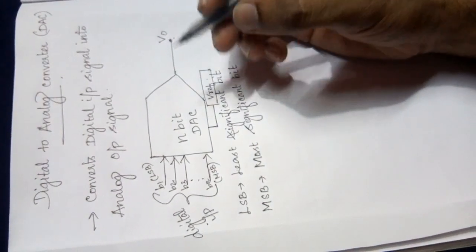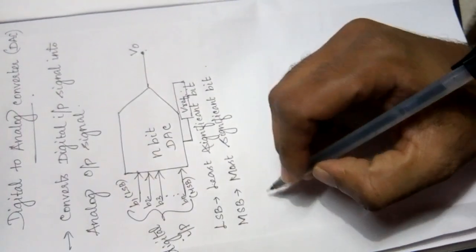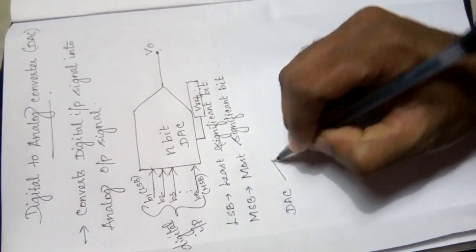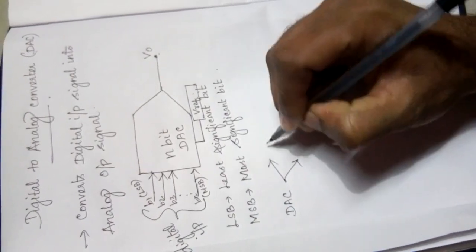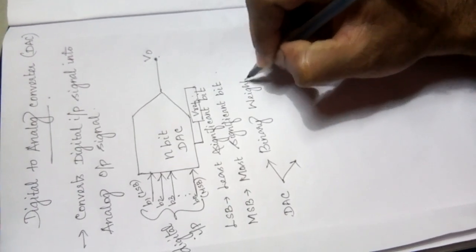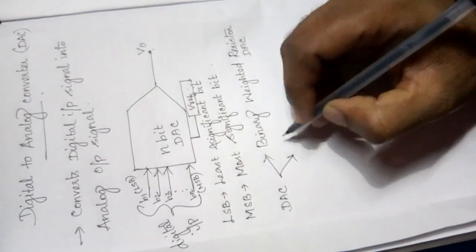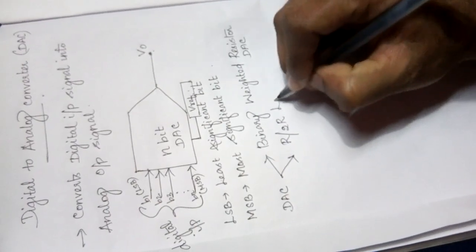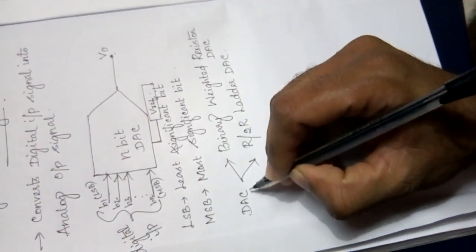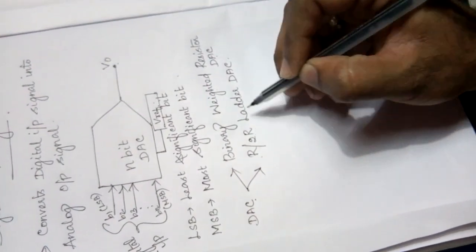In order to perform Digital to Analog conversion, we have to provide a reference voltage V_reference. Depending upon the Digital to Analog conversion technique, DACs are classified into two types: one is the Binary Weighted Resistor DAC, and another one is the R/2R Ladder DAC.